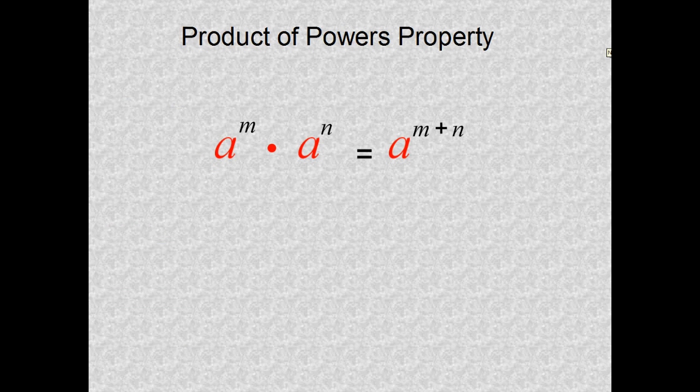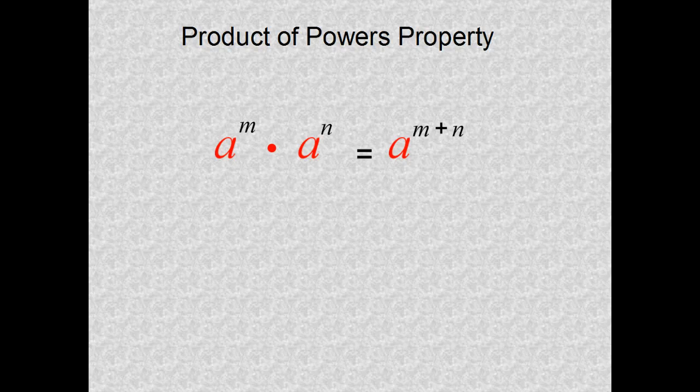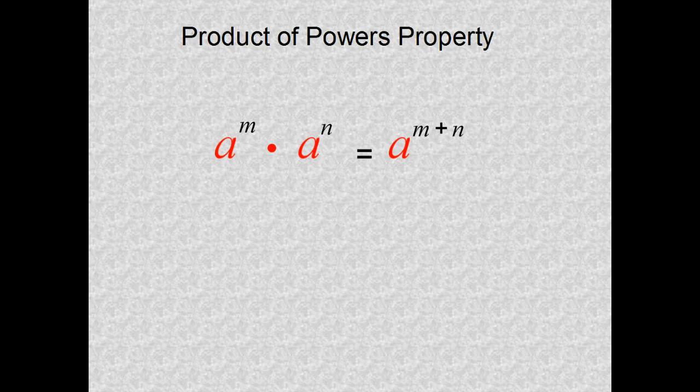Alright, the first thing we're going to do is talk about the product of powers property. There's a lot of letters on here. I'll explain with the next problem what they all mean. It says a raised to the m power multiplied, this is a product, so we're multiplying times a to the n power. And that is going to equal the base of a raised to the m plus n power. Oh, that's confusing. So let's clear that up a little bit.